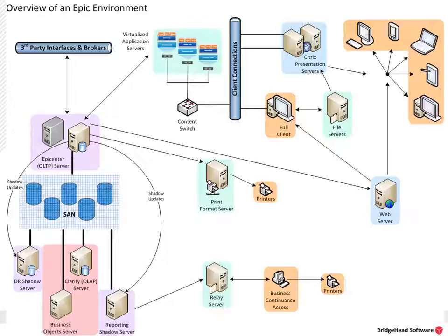For business continuity planning purposes, this is the starting point for discussing how to do a coordinated recovery, whether at the file, volume, server, or site level. This is typically termed tiers of criticality.